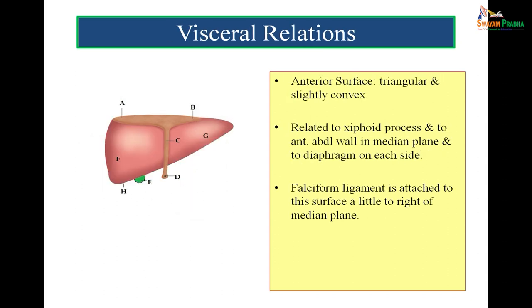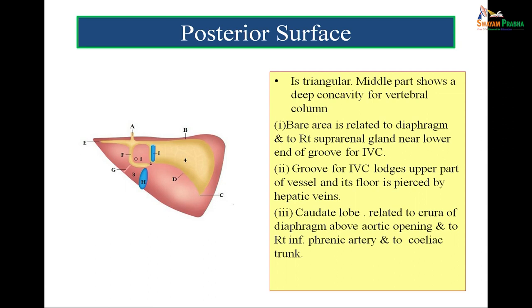The anterior surface of the liver is triangular and slightly convex. It is related to the xiphoid process and to the anterior abdominal wall in the median plane and to the diaphragm on each side. The falciform ligament is attached to the anterior surface a little to the right of the median plane. The posterior surface of the liver is triangular, and its middle part shows a deep concavity for the vertebral column. The bare area of the liver lies between the superior and inferior layers of the coronary ligament and is related to the diaphragm and the right suprarenal gland near the lower end of the groove for inferior vena cava.